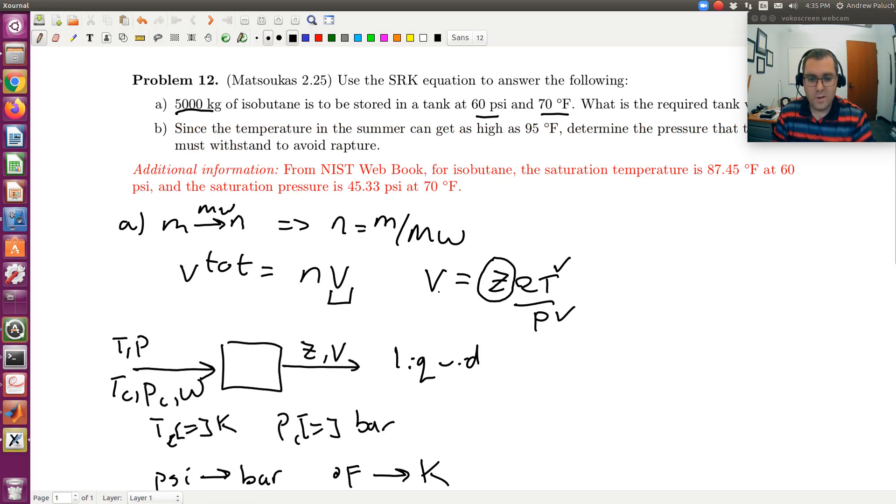If you get more than one V from your code, you're going to choose the smallest one. Then once you have V, you can go ahead and calculate. Well, so once you have V, we're given mass.